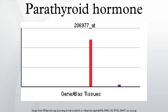Measurement: PTH can be measured in the blood in several different forms — intact PTH, N-terminal PTH, mid-molecule PTH, and C-terminal PTH — and different tests are used in different clinical situations. The average PTH level is 8–51 pg/mL.